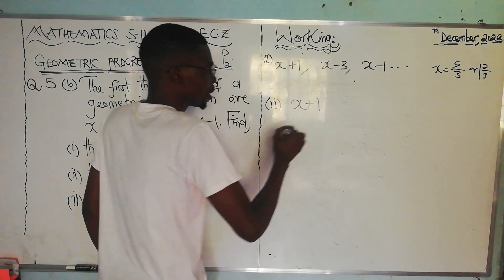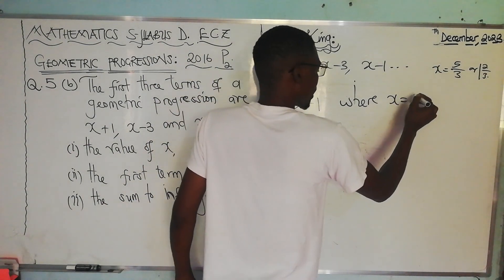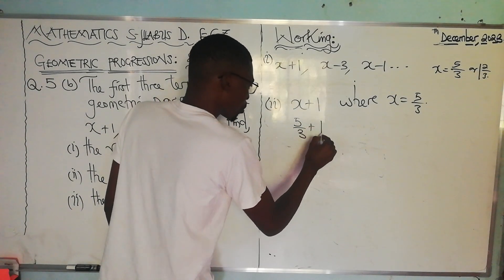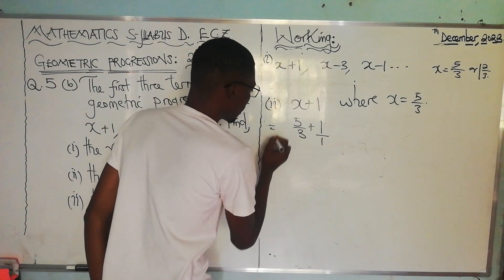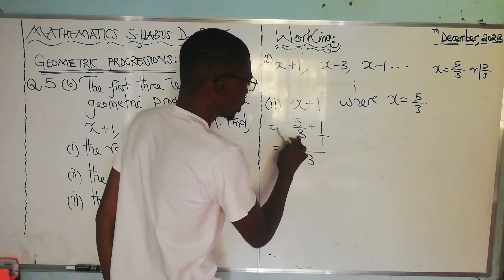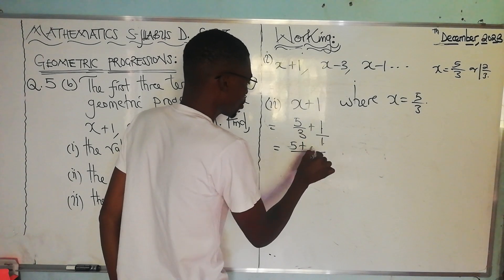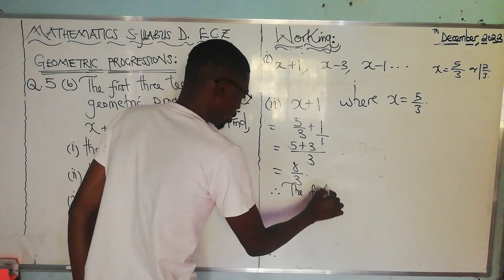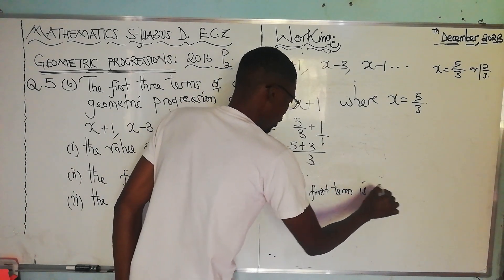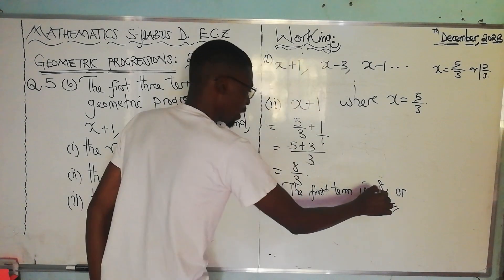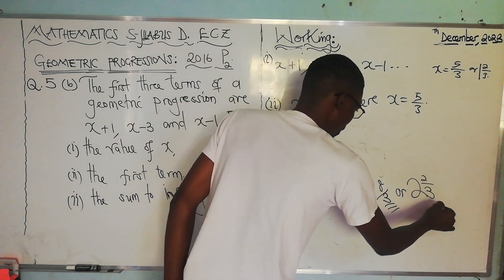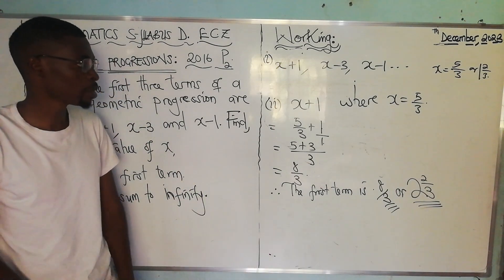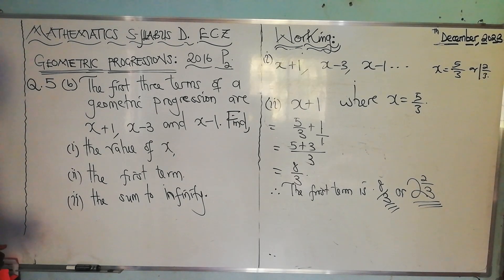Substituting 5 over 3 for x in the first term: the first term is x plus 1, where x is 5 over 3. So we have 5 over 3 plus 1. Finding a common denominator: 5 over 3 plus 3 over 3 equals 8 over 3. Therefore the first term is 8 over 3, or 2 and 2 over 3 as a mixed fraction.